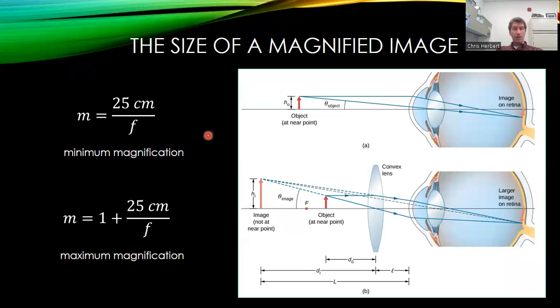So again, here are my two possibilities. The smallest magnification that I can get would be 25 centimeters divided by the focal length of the lens. But for maximum magnification, that would go to 1 plus 25 centimeters over the focal length.